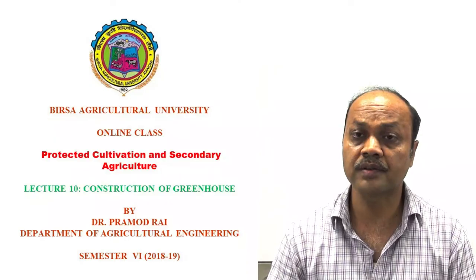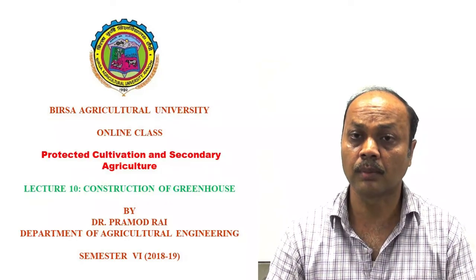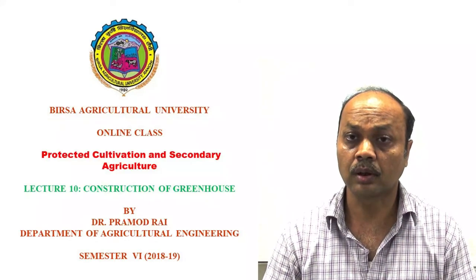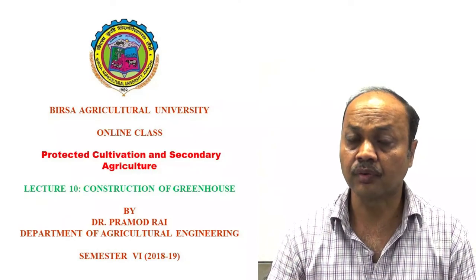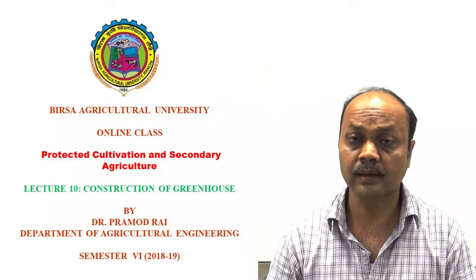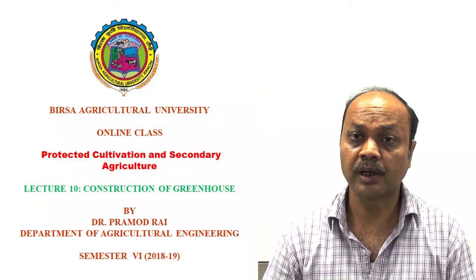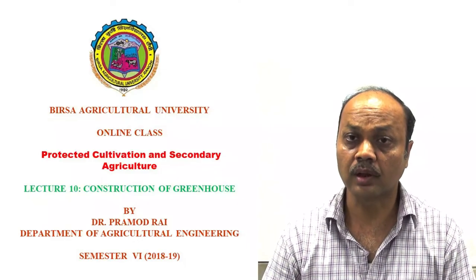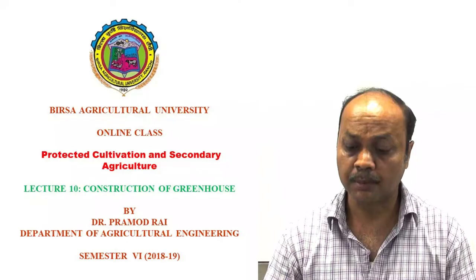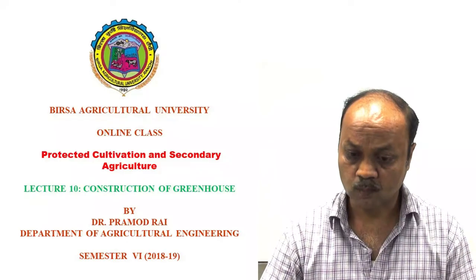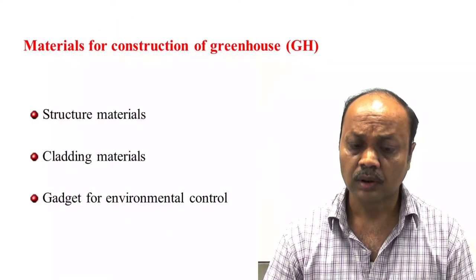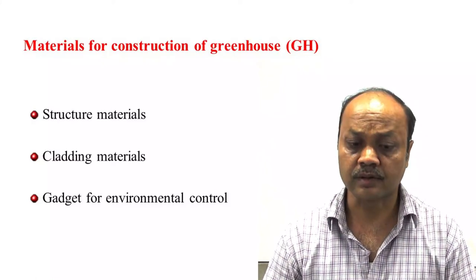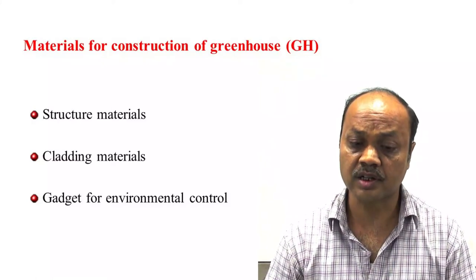In construction, we will not discuss more about the design. We will focus on what are the different materials required for construction of various types of greenhouse, and lastly we will discuss about the various types of gadgets used in the greenhouse to measure the microclimate parameters. For construction of greenhouse there are three things: structural materials, cladding materials, and gadgets.